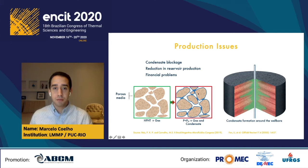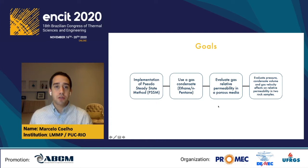The goals for this work are: first, to implement the pseudo-steady state method using a gas condensate to evaluate the gas relative permeability in a porous media, and then to evaluate pressure, condensate formation, and gas velocity effects on relative permeability in two rock samples. To do that, we need to decide which condensate mixture and which rocks to use.